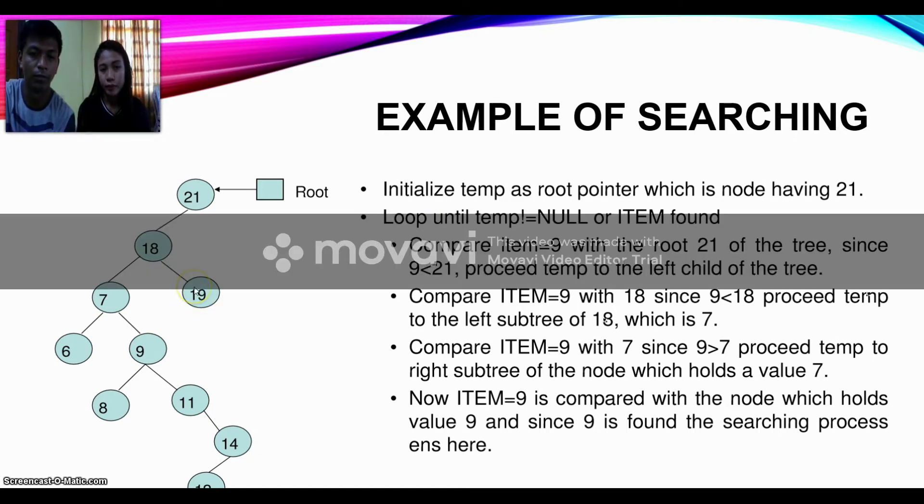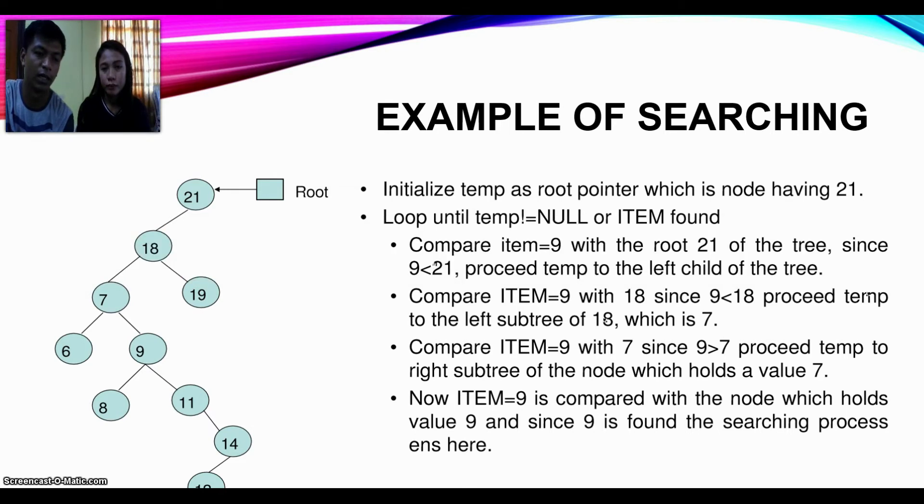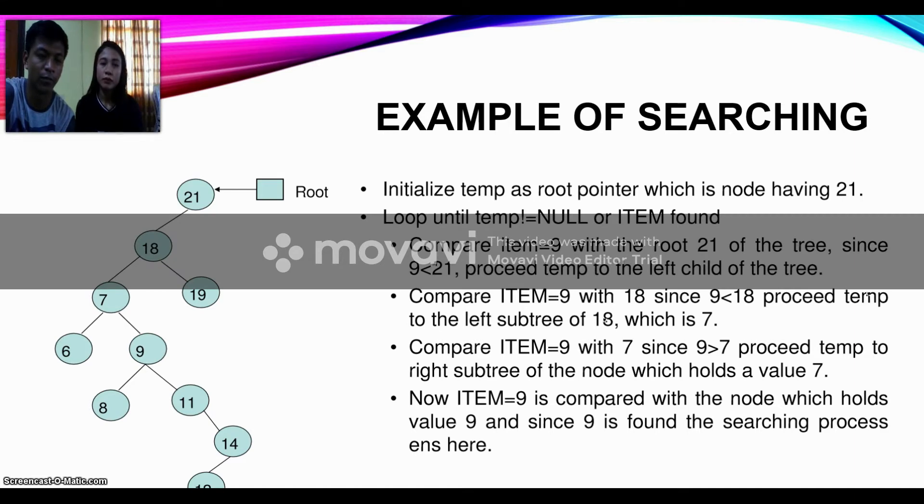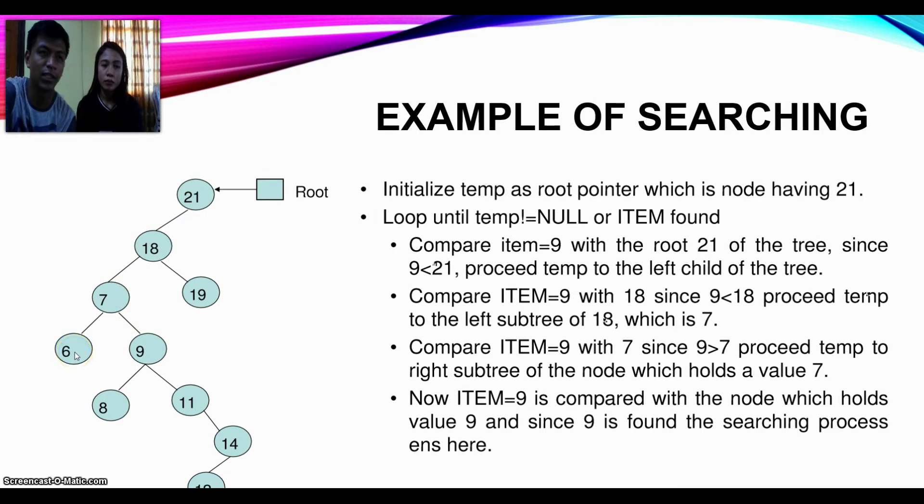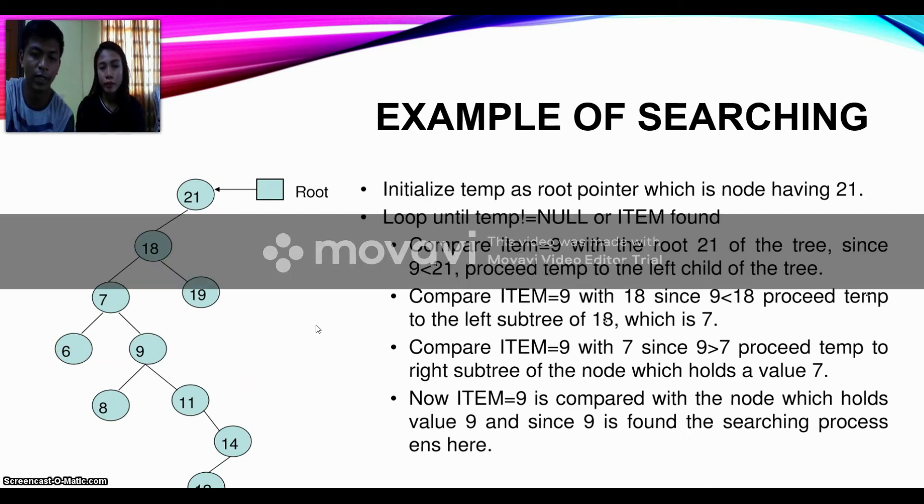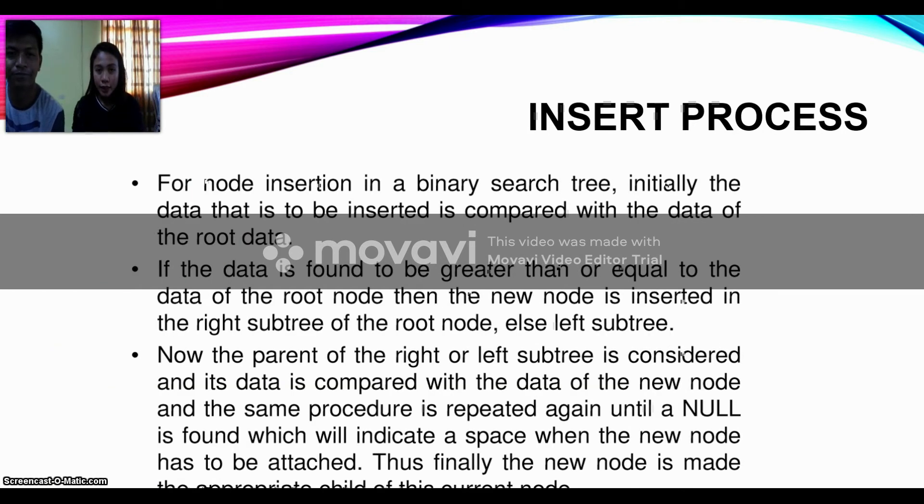That's another example when the search is successful. But if the searched value is not in the binary tree, for example searching for 1, we follow the same order. It will loop until it can't find anything. 1 less than 21? Yes, go to 18. 1 less than 18? Yes, go to 7. 1 less than 7? Yes, go to 6. But 6 is a leaf node, so 1 less than 6 but there's nothing found, so the search becomes unsuccessful.